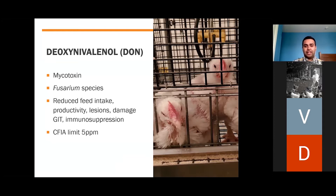In severe enough cases it can cause immunosuppression. Because of this, CFIA has limited DON to five parts per million in finished diets and has proposed limits of ten parts per million for single feed ingredients. Due to those potential limitations, any crops that are above ten parts per million DON would be considered salvage and worthless economically.